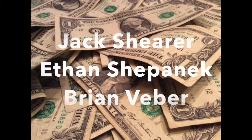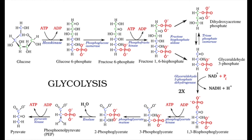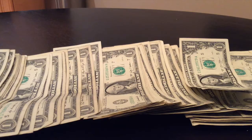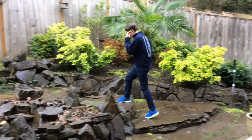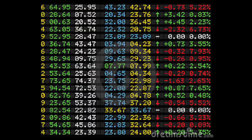Glycolysis is a series of reactions, enzymatic actions, energy transactions. It takes glucose molecules of sugar and breaks them down for NADH and ATP. It's an anaerobic cytoplasmic pathway.